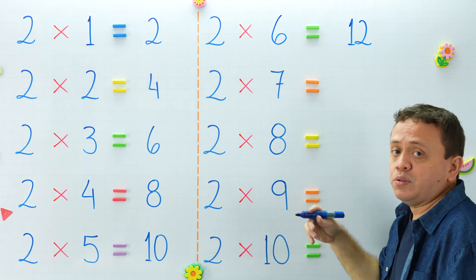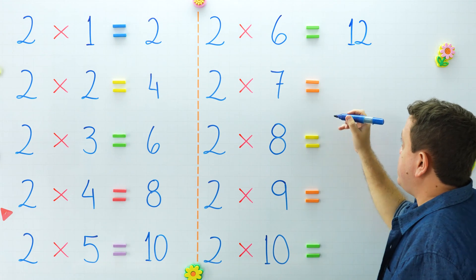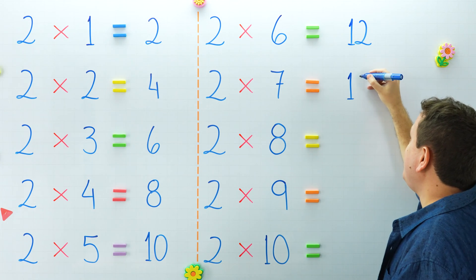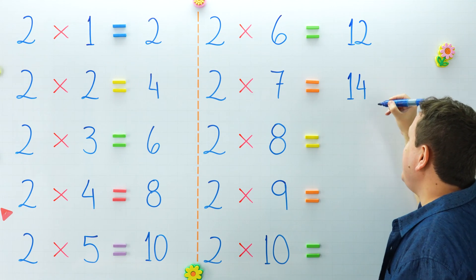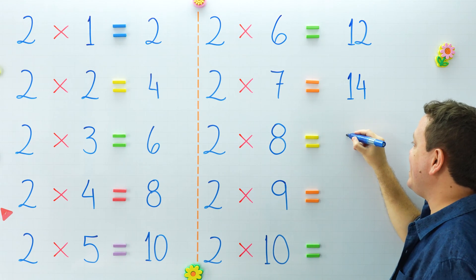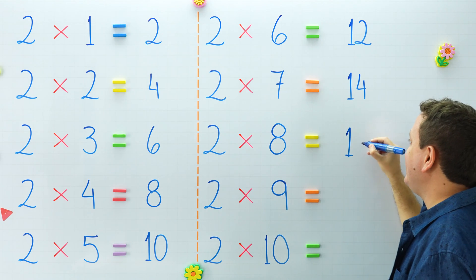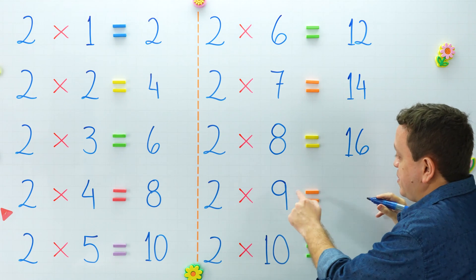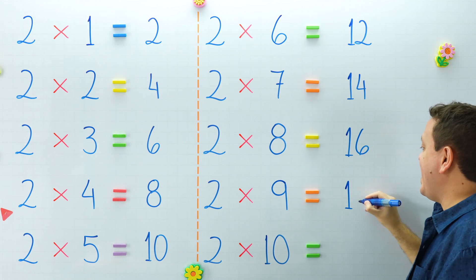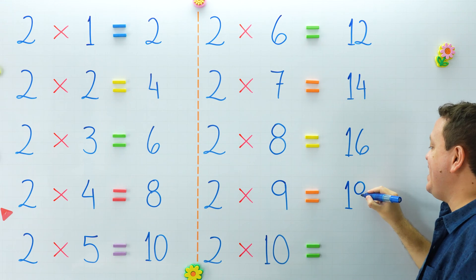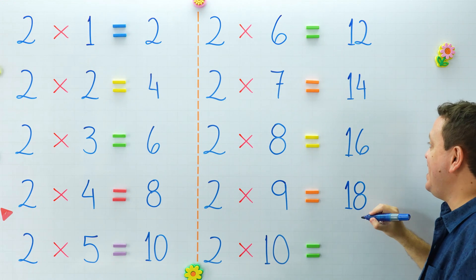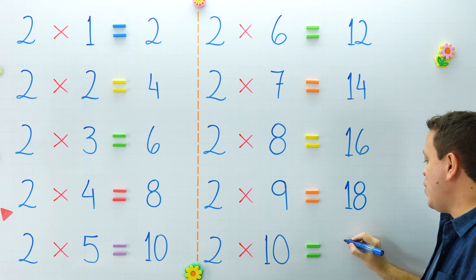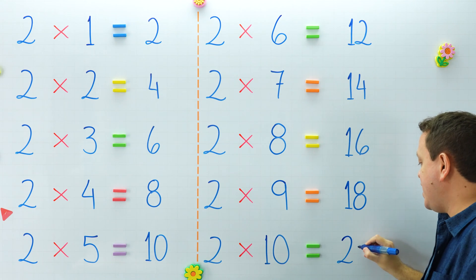2 times 6 equals 12. What is 2 times 7? 2 times 7 equals 14. That's right. 2 times 8 equals 16. 2 times 9 equals 18. The last one: 2 times 10 equals 20.